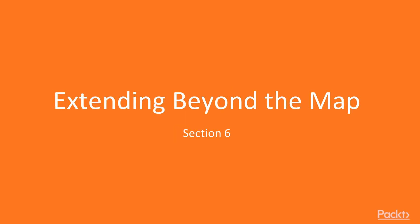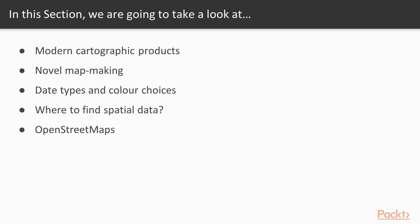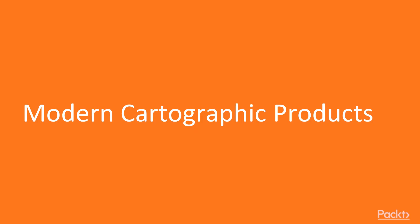Welcome to Section 6, Extending Beyond the Map. Previously, we have gone over many methods of map making and geospatial data analysis. In this section, we will extend beyond our subjects and introduce you to modern cartographic products and map making methods. We will then introduce you to different data types and color choices, where to find spatial data, and further resources pertaining to your geospatial projects. This is video 1, Modern Cartographic Products.